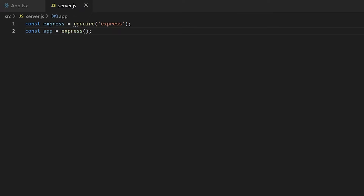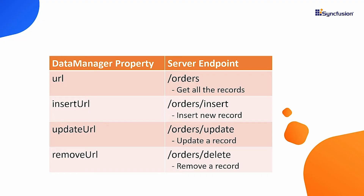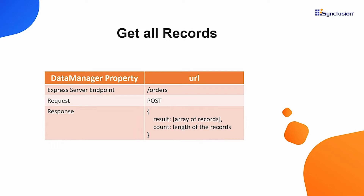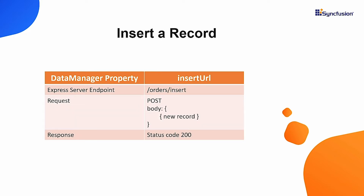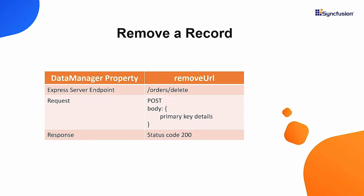As I am going to bind this Express server's endpoints through the Data Manager, the Data Manager will look for endpoints for get, insert, update, and remove records. The URL property will look for the post endpoint which returns the entire records. The insertUrl property will look for the post endpoint which accepts a new record in the body and adds it to the database. The removeUrl property will look for the post endpoint which accepts a primary key in the body and deletes the record from the database.